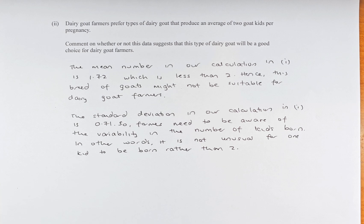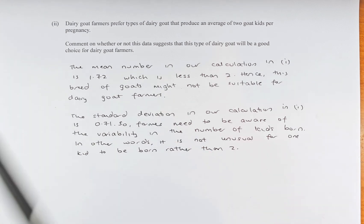We calculated the mean and standard deviation in part 1 — if you have not watched it, please watch that first. The mean was 1.72, which is less than the 2 kids that the farmers want. So this breed of goat might not be suitable for this dairy goat farmer.